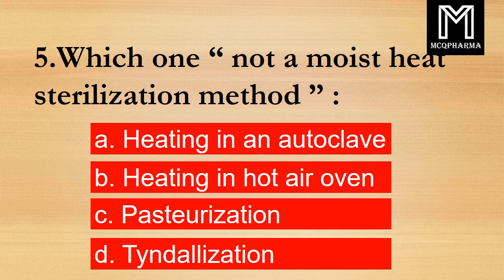Question number 5. Which one is not a moist heat sterilization method? Option A: Heating in an autoclave. B: Heating in a hot air oven.